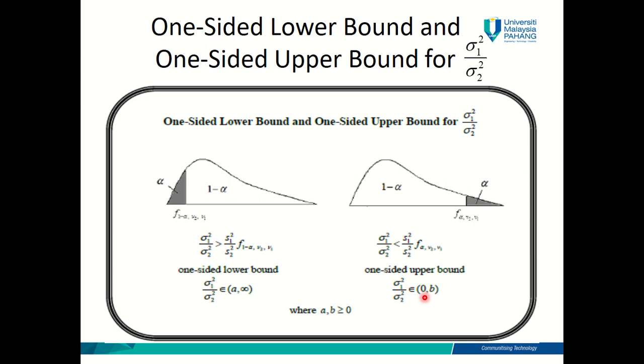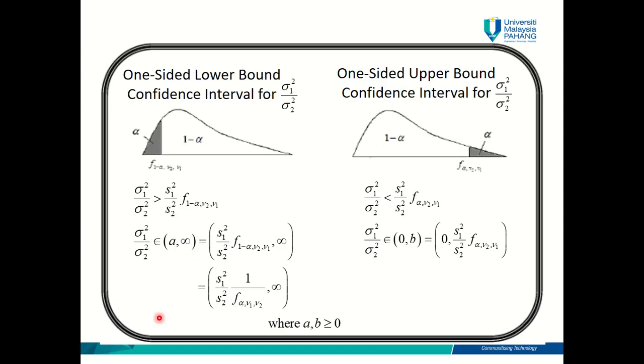Alright, so you really need to take note on this because this information down here is not provided in your formula book. So this will require some understanding or some memorization. Okay, so let me show you a better view on the formula. What I mean is this. So the actual formula for the one-sided lower bound confidence interval for σ₁²/σ₂² for the lower bound is this. Okay, this is the formula for A, comma, infinity. So this is the complete formula for the one-sided lower bound confidence interval.